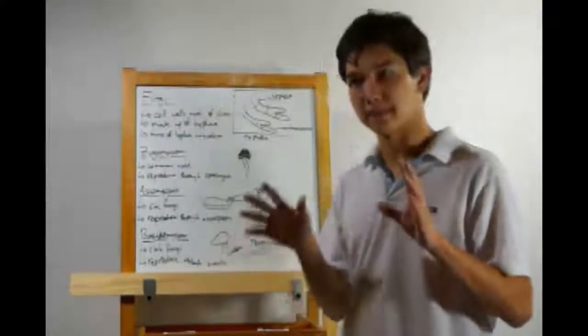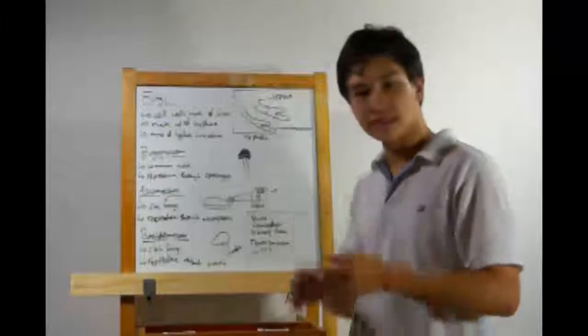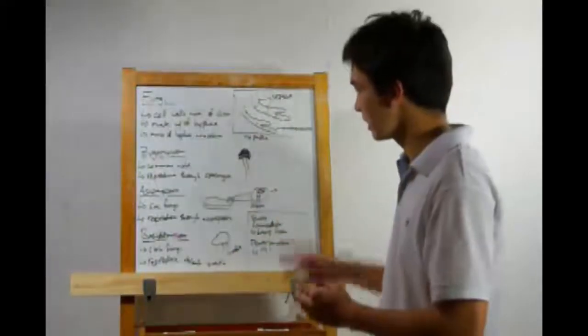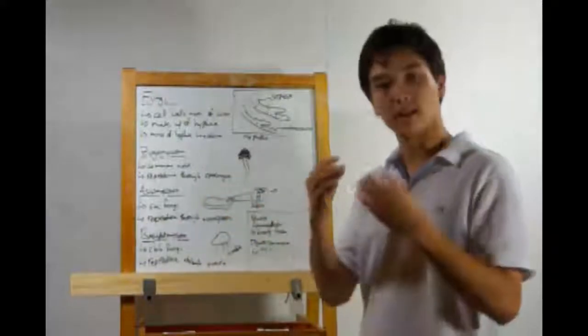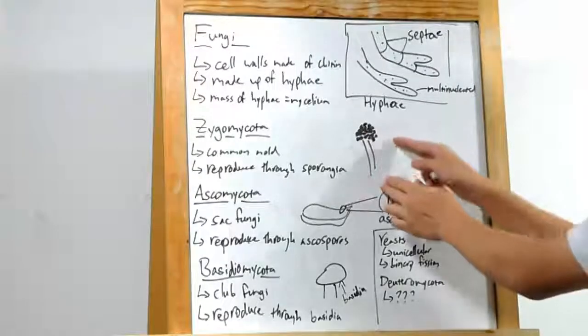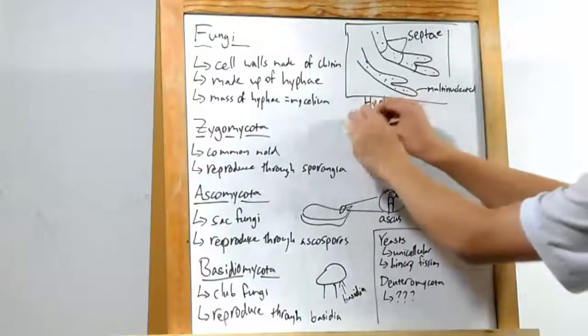Alright. Now, let's go into the different types of fungi. First up, zygomycota. These are the common molds, things you find growing on your bread. These will reproduce something called a sporangia. If you look really closely at a mold, you can see these little things sticking up,